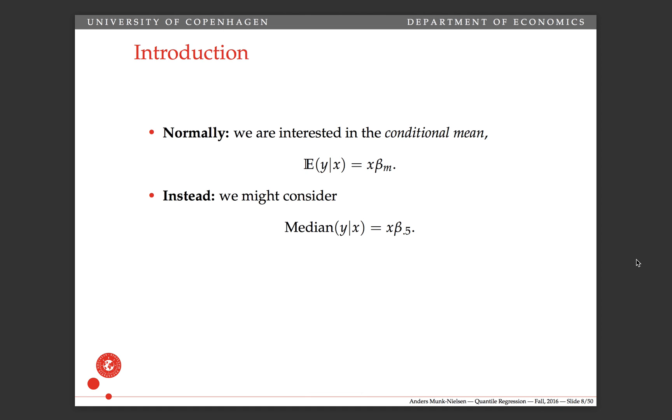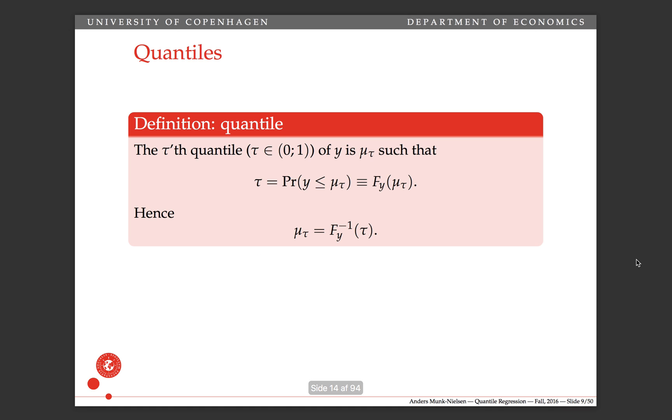But of course you might wonder why the mean? Why not the median? We could think of a model in which the conditional median is linear in x, and in general we can think of the tau-th percentile, or the tau-th quantile, as being linear in x, and that's what quantile regression is all about.